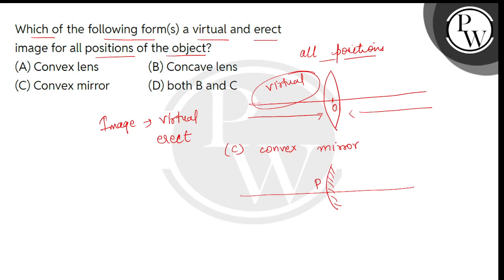If we analyze the optical instruments, there are two relevant ones: first is the concave lens, given as option B, and option C gives us the convex mirror.